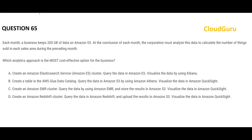Please pause the video and read the next question carefully. A company has 200 GB of data on S3 every month and needs to run calculations to find total items sold in each area during the month. Essentially, you have 200 GB of data and need to provide aggregated results to stakeholders. Option A suggests creating an Elasticsearch cluster, loading the data into it, and visualizing using Kibana. The question asks for the most cost-effective solution, so Elasticsearch is not ideal.